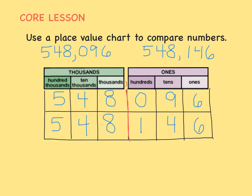We can also use a place value chart to compare numbers. When we're comparing numbers, we're just trying to figure out which number has a greater value. So let's use a place value chart to compare the numbers 548,096 and 548,146.